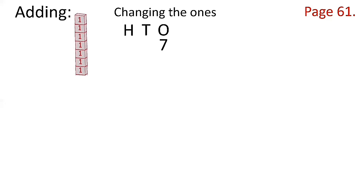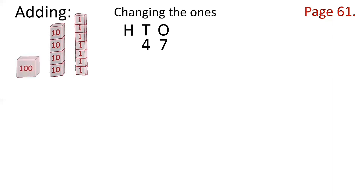Now let's proceed to the tens place: 1, 2, 3, 4 — so how many tens? There are 4 tens, equal to 40. Now let's go to the hundreds place: 1, 2 — so there are 200. So if you read that, it is 247.